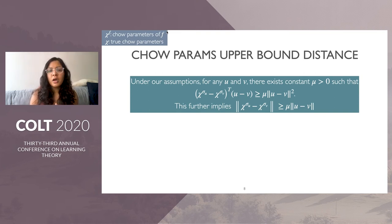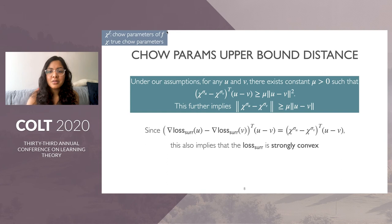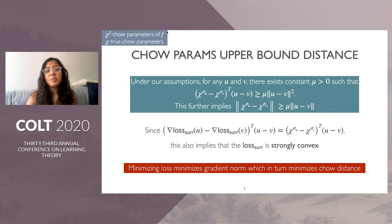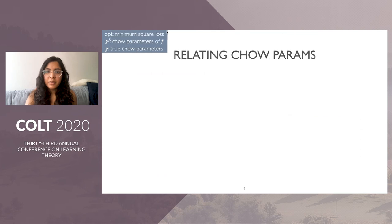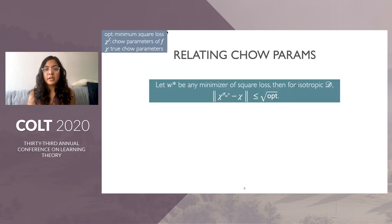We show these Chow parameters are related to the weight vectors. If u and w are two vectors and the Chow parameters are close, then u and w are close too. This also shows the surrogate loss is strongly convex, so minimizing our loss minimizes the gradient norm, which minimizes the Chow distance. We can show that if W* is any minimizer of the squared loss, then for any isotropic distribution, the Chow parameters of W* are close to the true Chow parameters by square root opt.